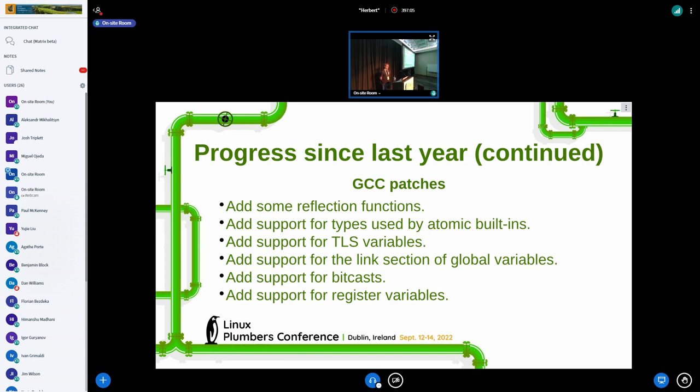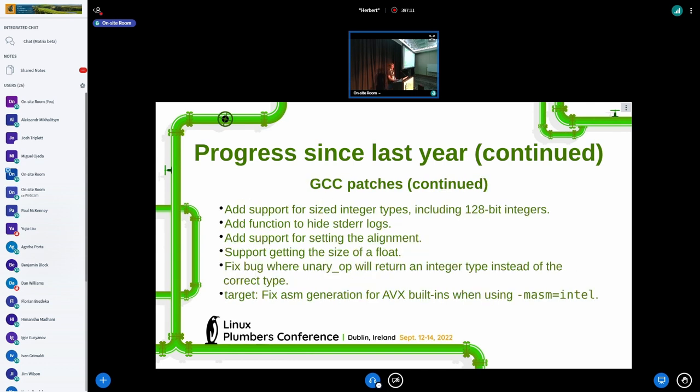To make this work, I had to write a bunch of GCC patches. Most of them are for libgcc JIT. We also have one of them, the last one in this list, that was outside of it. It was fixing a bug for some AVX built-ins when you were using the Intel assembly syntax. So, it's pretty cool that two seemingly unrelated open source projects could help each other that way by having the test of one finding out a bug in the other.